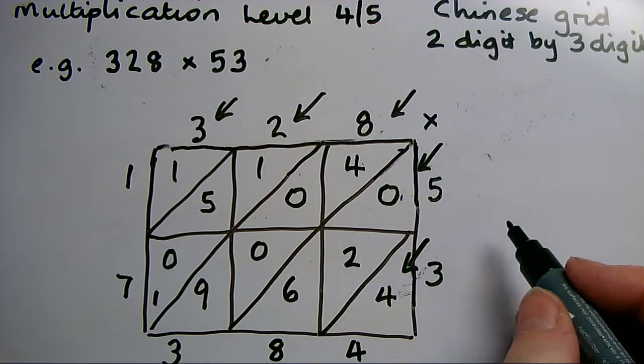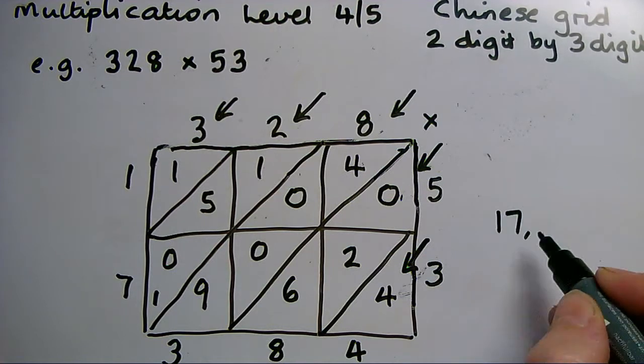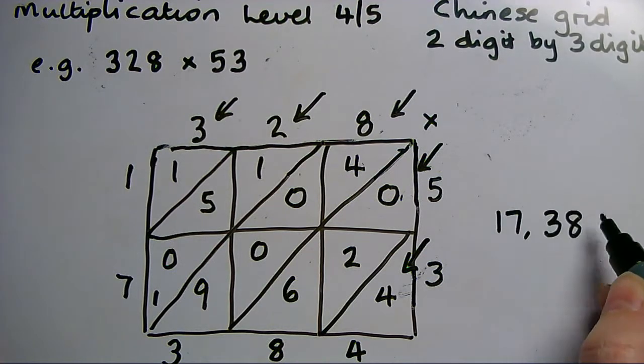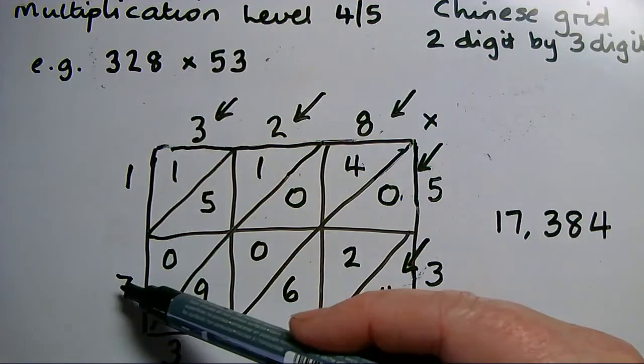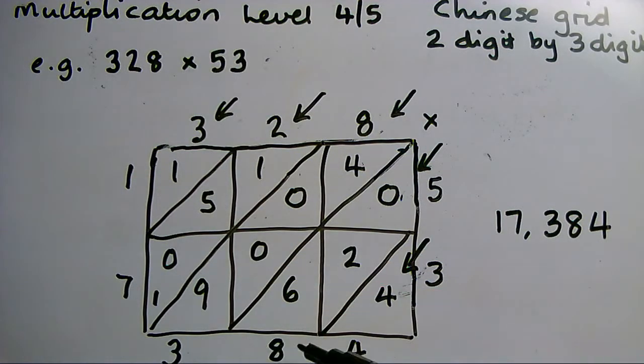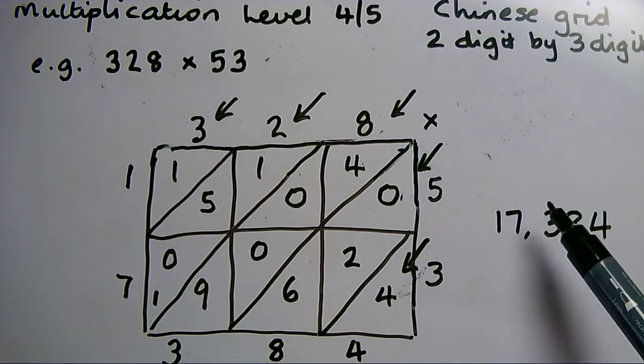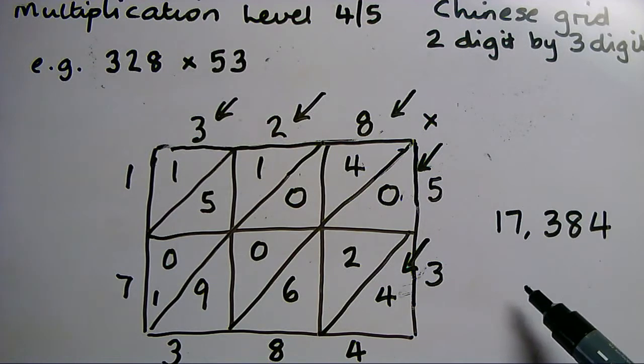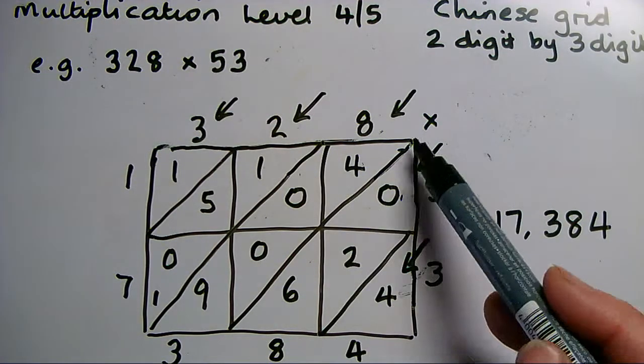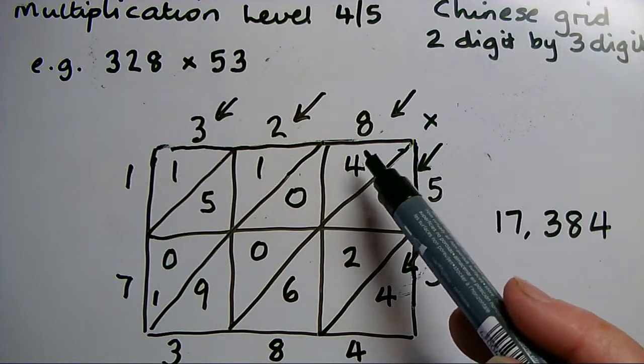17,384. The place value has taken care of itself. I've not had to worry about the zeros at all. I just fill in each square and put the larger digit at the top, smaller at the bottom.